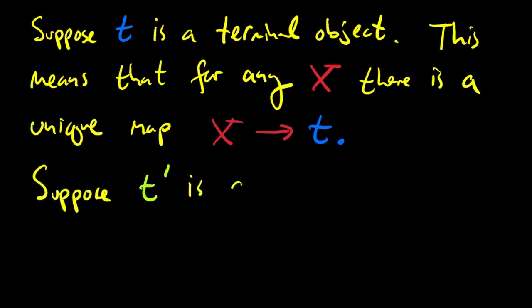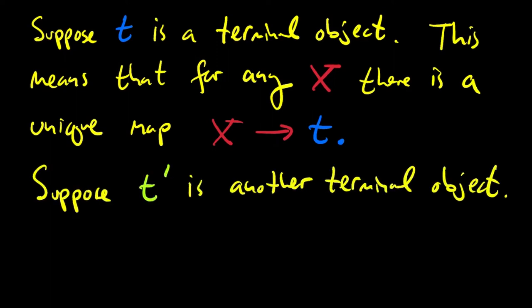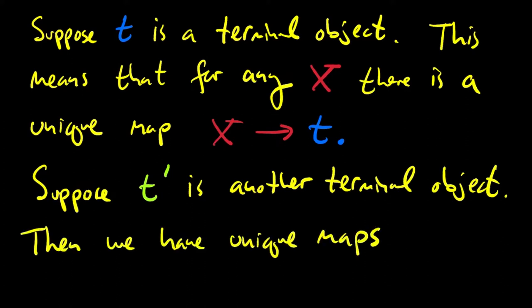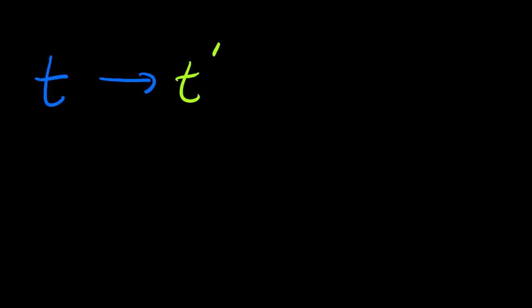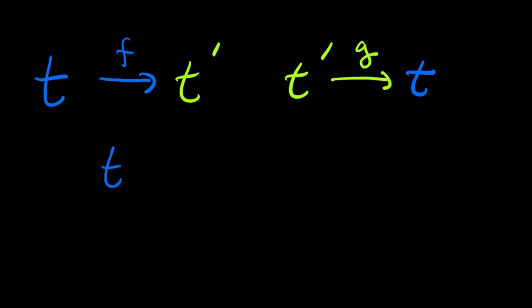In order to see that t is unique up to unique isomorphism, let's suppose that we have another terminal object called t prime. Then we'll have unique maps from t to t prime, because t prime is terminal, and from t prime to t, because t is terminal. It turns out that these two maps must be isomorphisms. We already know that they're unique because of the definition of terminal object. To finish the argument, I just need to show that these two maps are inverses of one another.